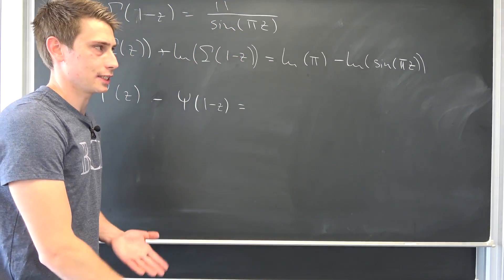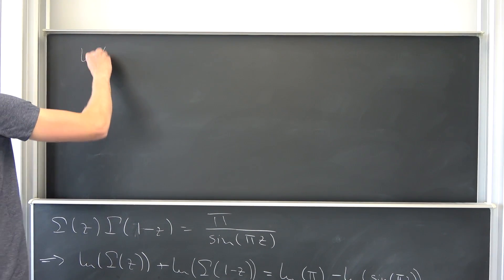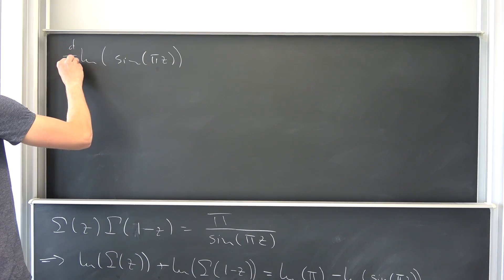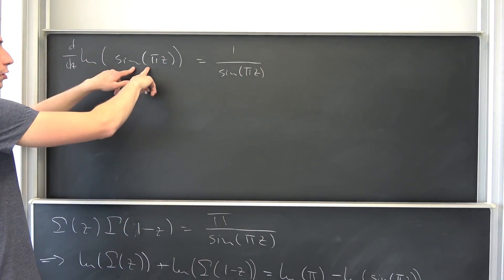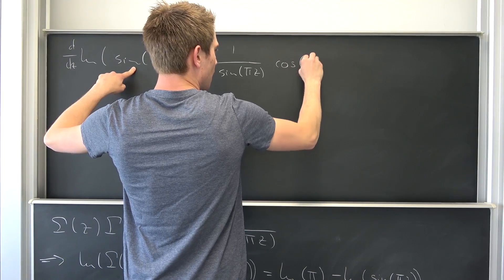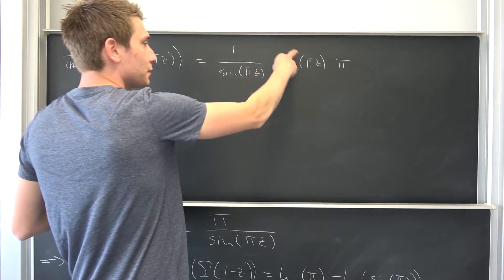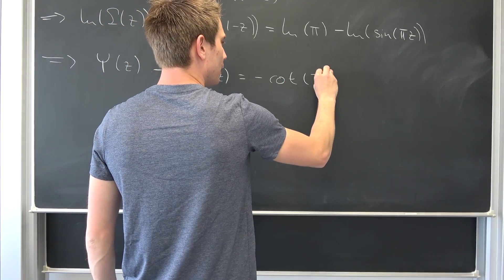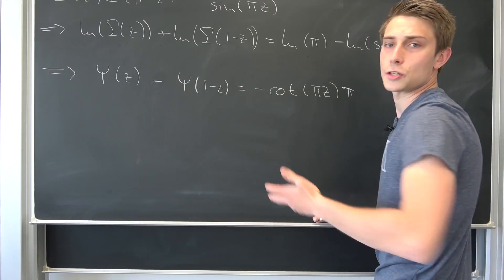Now we have to differentiate the natural log of sine of pi times z. First, 1 over sine of pi times z, then the inner derivative gives cosine of pi times z, and the even more inner derivative is pi. So this is the cotangent of pi times z times pi, meaning the right side equals negative pi times cotangent of pi times z. This is the reflection formula for our digamma function.